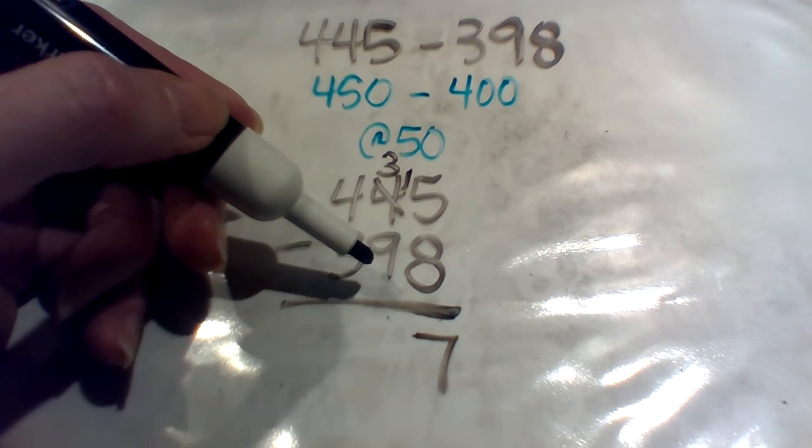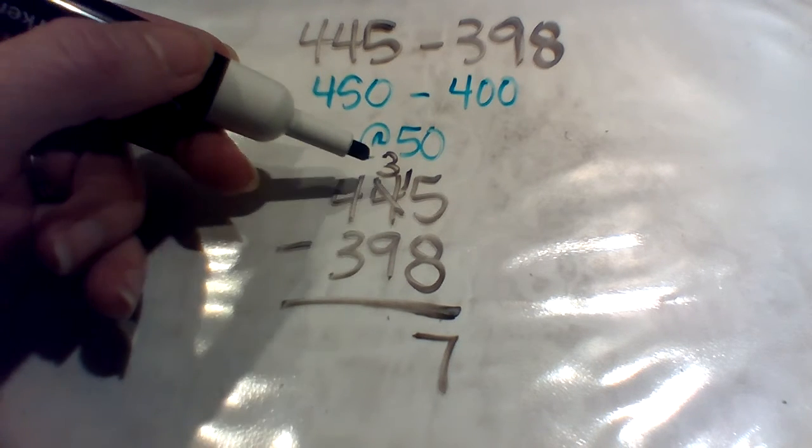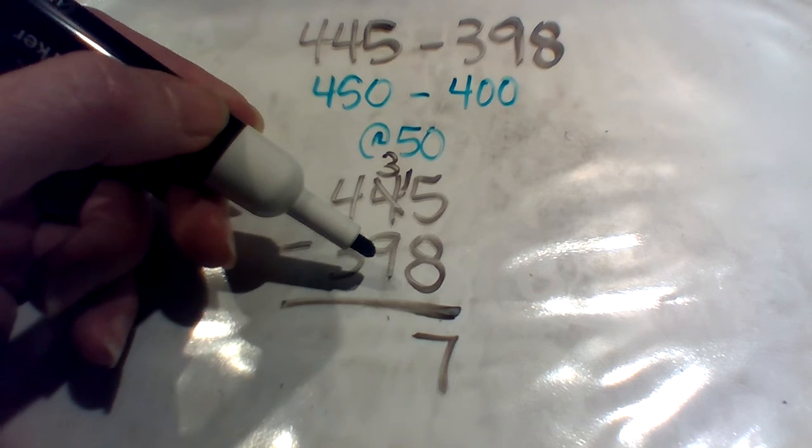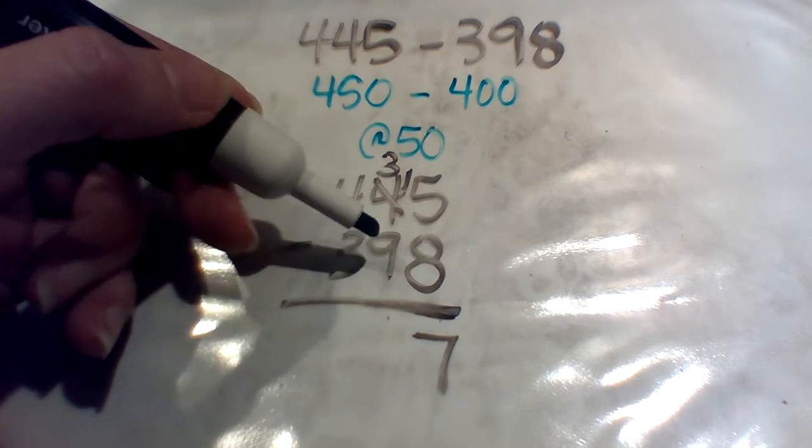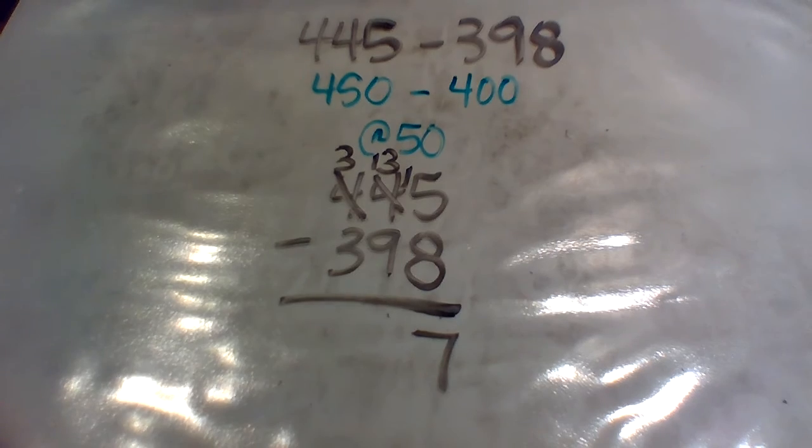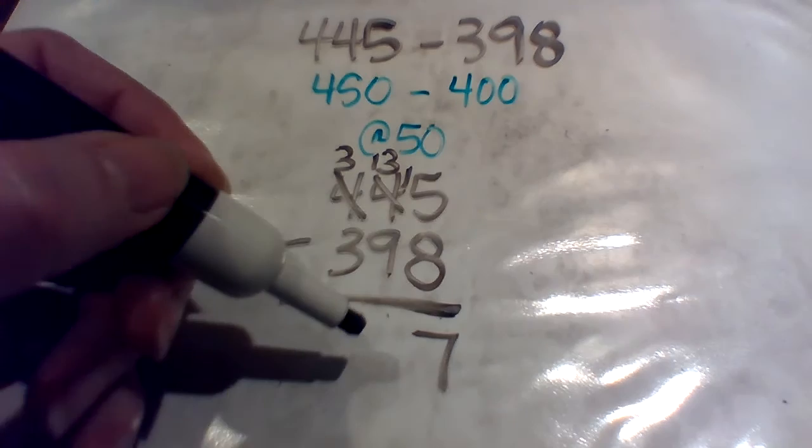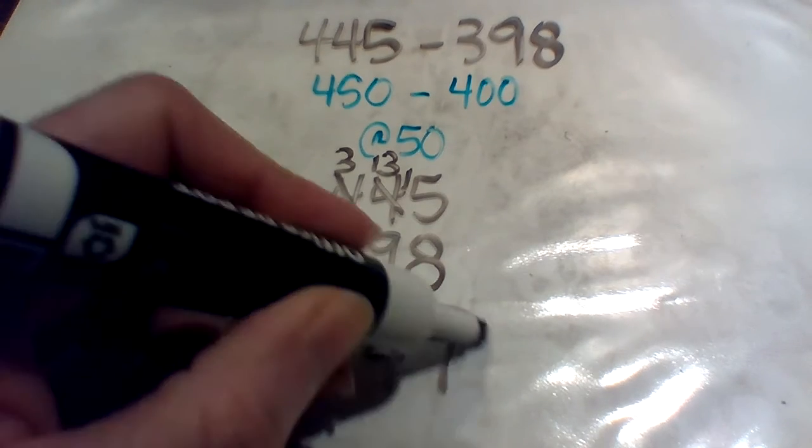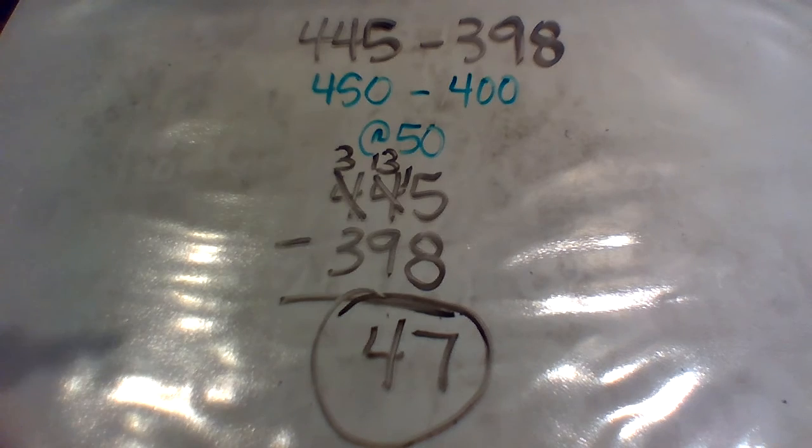Three minus nine, I cannot do that because three is smaller than nine and I cannot reverse this order. I always go top to bottom. So this becomes a three. This is 13. And 13 minus nine gives me four. My final answer is 47 and that's really close to 50. So my answer makes sense.